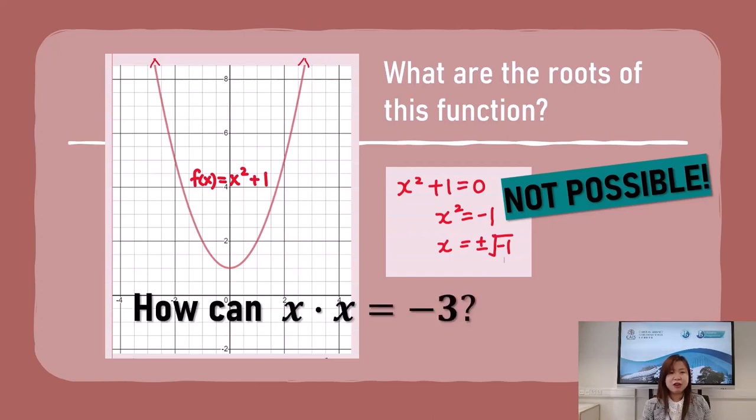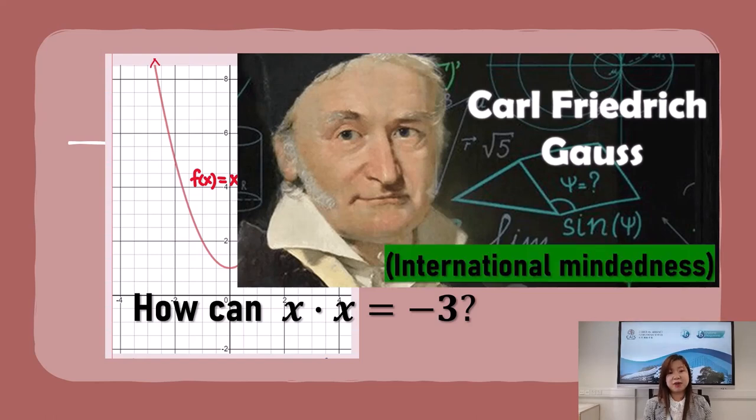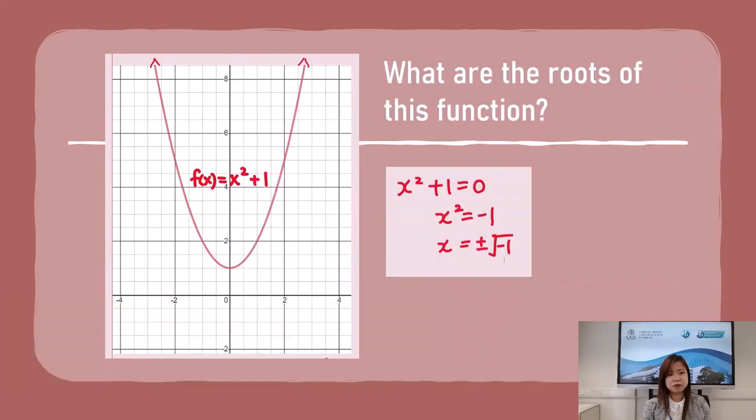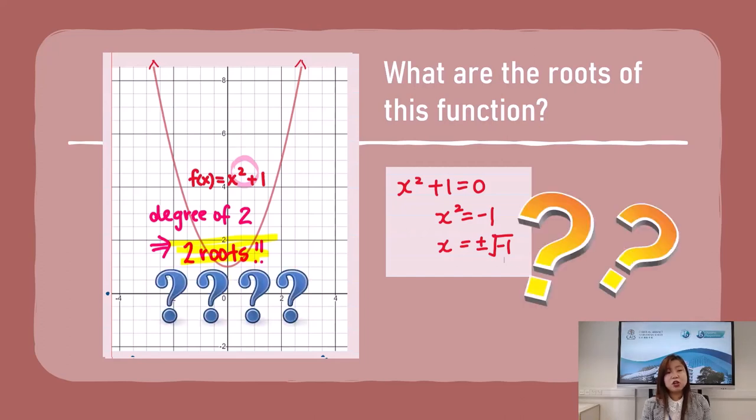Because after all, how can two identical numbers, when multiplied, have a negative product? Well, another element of international mindedness: Gauss, a German mathematician in the 18th century, proved that the degree of a polynomial equation is equal to the number of its roots. So we have this function with a degree of 2, which implies it should have two roots. But how? We couldn't find the answer. We don't see it visually, and we cannot solve it algebraically.